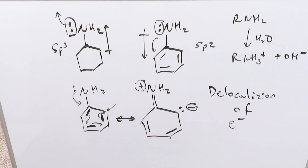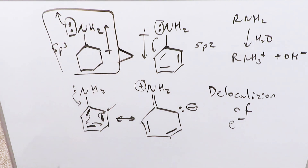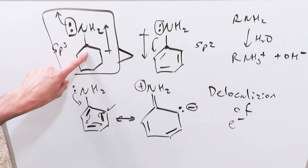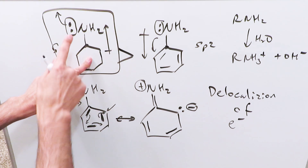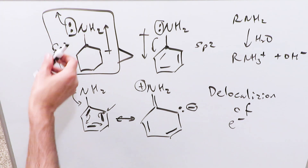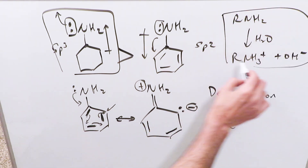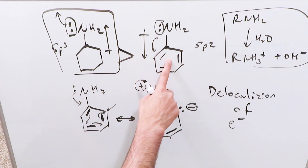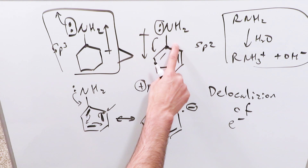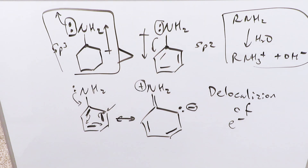So which is more basic? Cyclohexylamine is more basic. It has an sp3 carbon, no resonance stabilization, and its lone pair electrons are available for protonation and basic reactions. In benzeneamine, the electrons participate in resonance, the sp2 carbon is relatively electronegative and pulls electron density toward itself — both effects make it less basic. And that is the end of this video. Thank you.